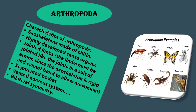The next phylum is Arthropoda. They have exoskeletons made of chitin, highly developed sense organs, and jointed limbs — which must be jointed since the exoskeleton is rigid and cannot bend to allow movement. They also have segmented bodies, a ventral nervous system and bilateral symmetry. Examples include prawns, spiders, butterflies, houseflies, scorpions, cockroaches, crabs and centipedes.